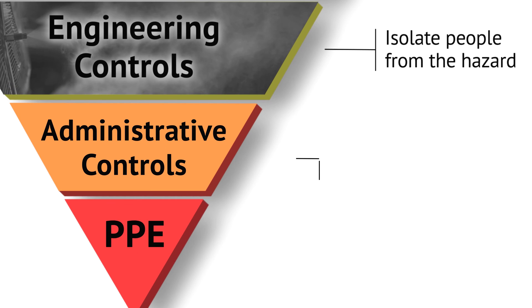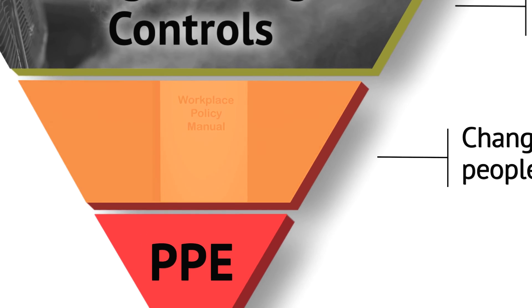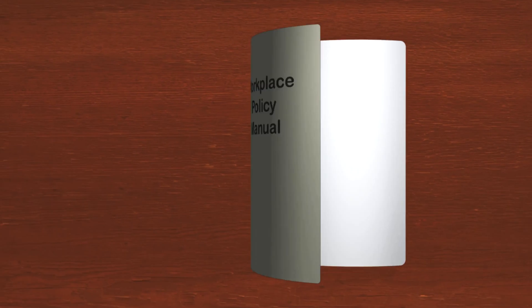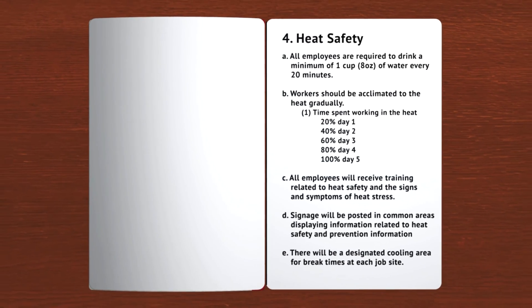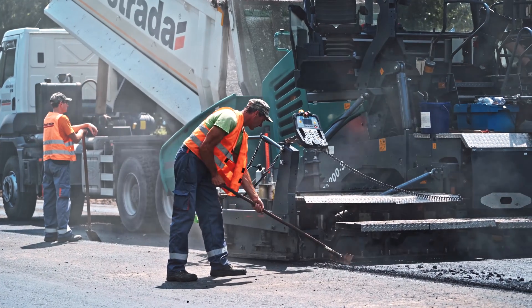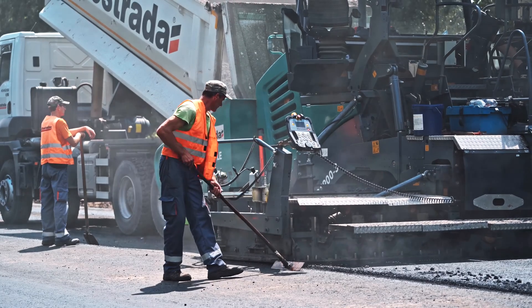Administrative controls involve creating procedures or a program. For example, an employer may require workers to drink water every 20 minutes and limit time in the hot environment. Acclimation is critical — three out of four workplace fatalities recorded by OSHA have occurred within the first week of starting that job.